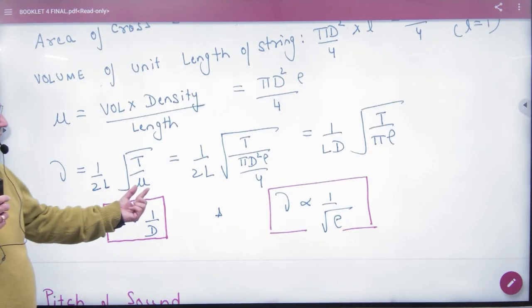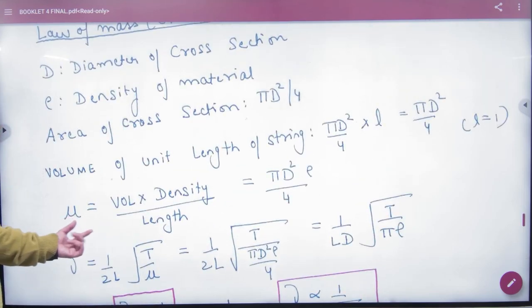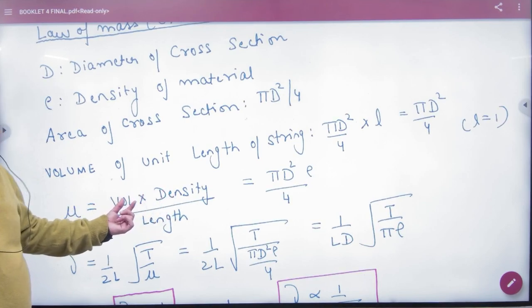Mu means mass per unit length. To work with mass, we will write volume into density. Volume into density, where volume is a cylindrical wire, or volume by length.